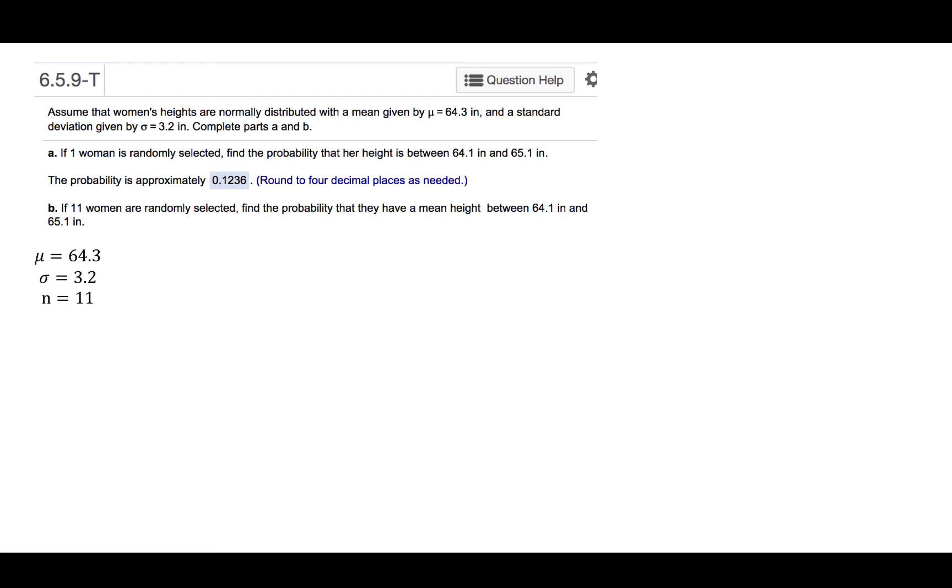Let's begin by organizing the information given to us in the problem and identifying with the correct symbols each piece of information. We have the mean equal to 64.3, the standard deviation equal to 3.2, and in part B we have a sample size of 11.